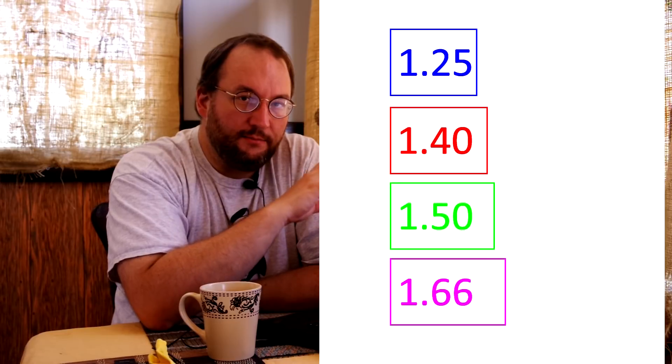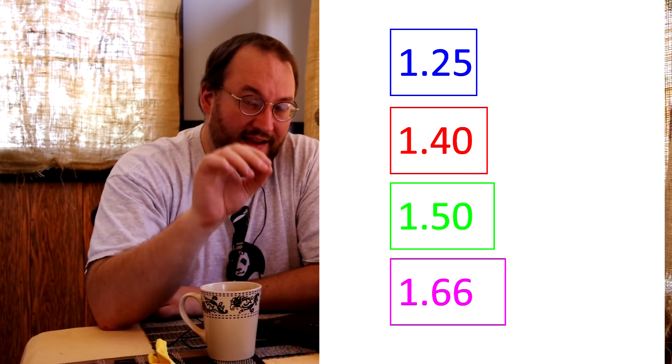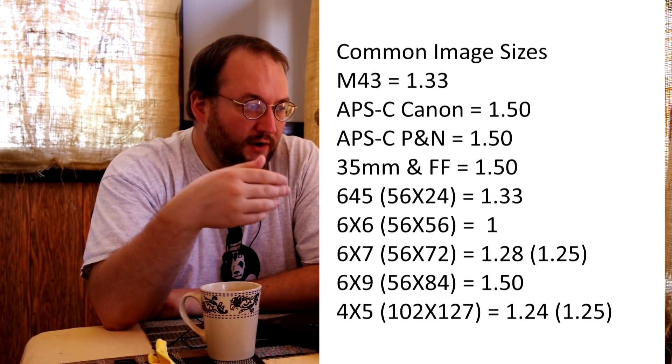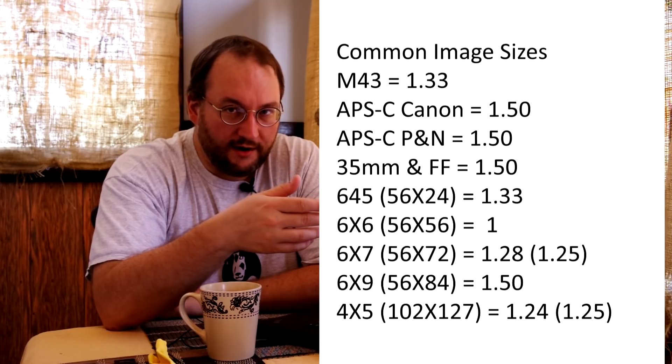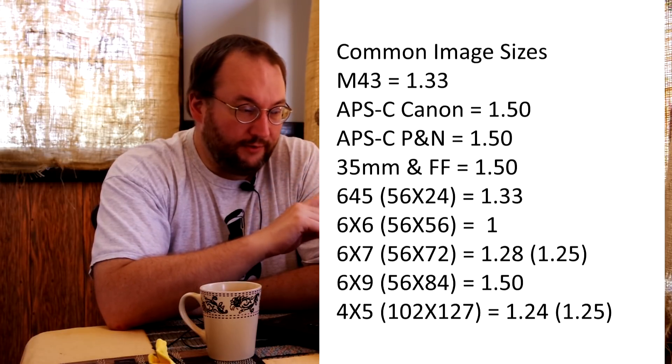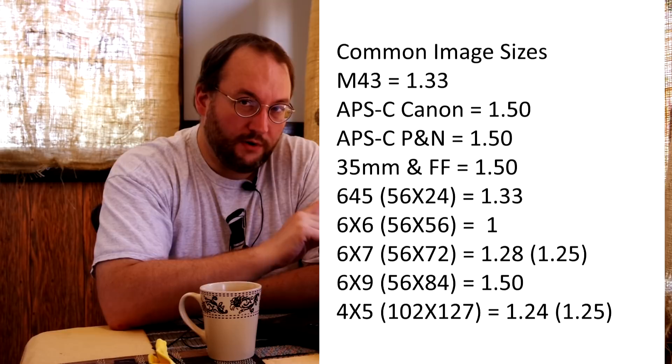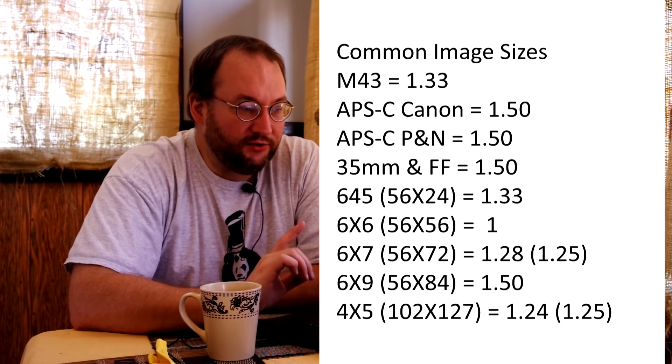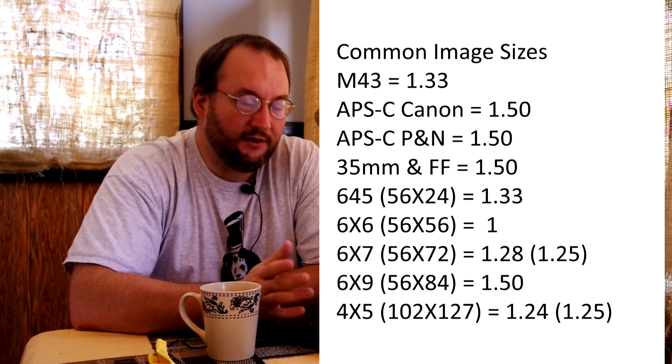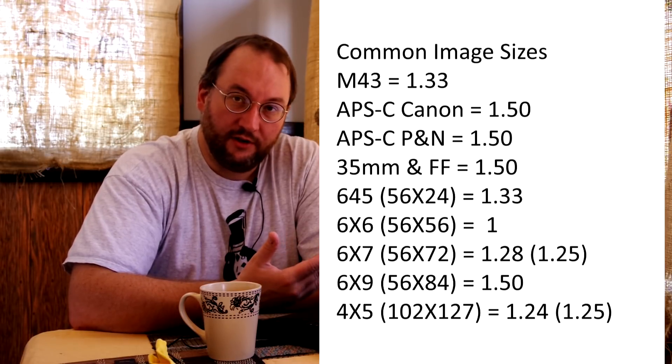That decimal notation is important for understanding the relationship between print sizes. Next we're going to look at common digital and negative sizes. This assumes no changing in aspect ratio from what you took to what you're going to print. M43 is the smallest we're going to look at. M43 is 17.3 millimeters by 13 millimeters, giving us 1.33. APS-C for Canon is 22.2 by 14.8 millimeters, which is 1.5. APS-C for Pentax, Sony, and Nikon is 23.6 by 15.6, giving us 1.51, we'll call it 1.5. 35 millimeter and full frame are 24 by 36, which is 1.5.